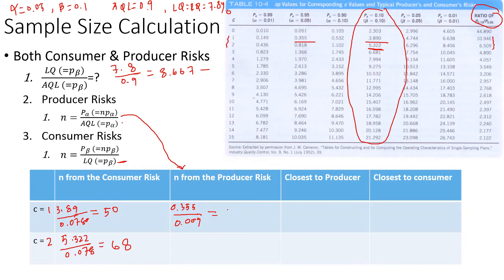For C value 2, the NP value is 0.818 divided by 0.009, which equals a sample size of 91.